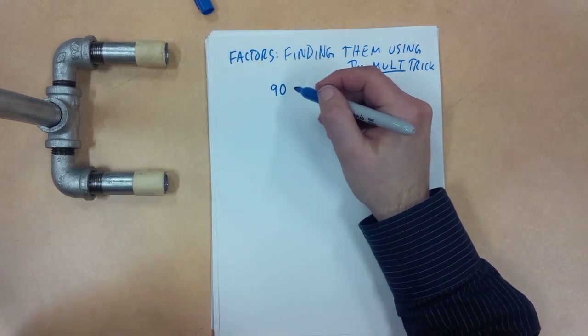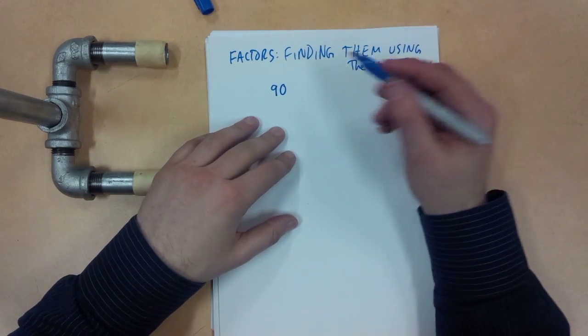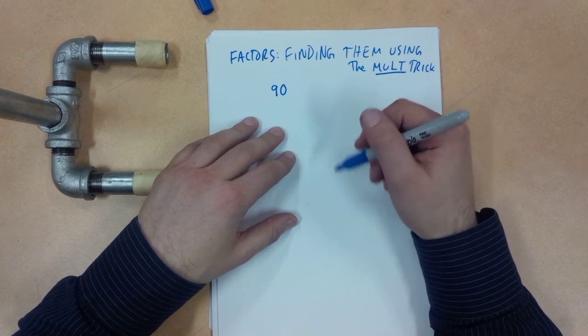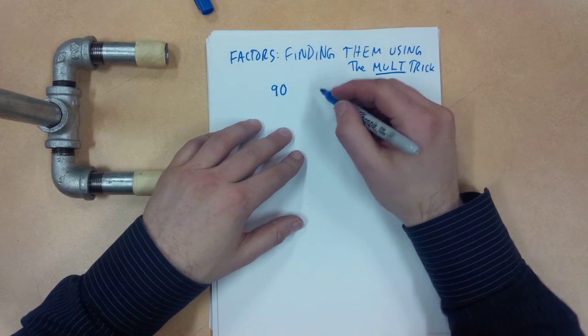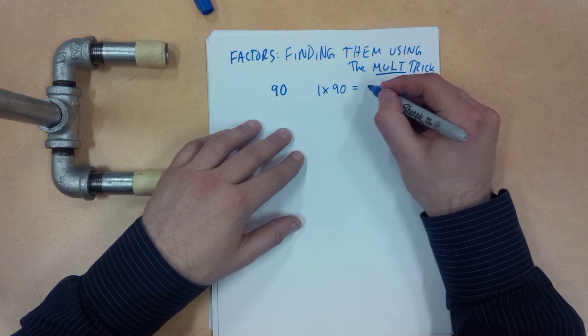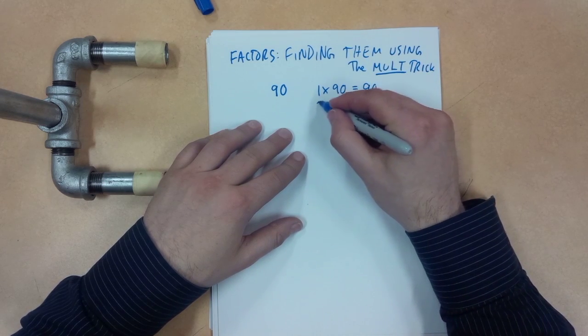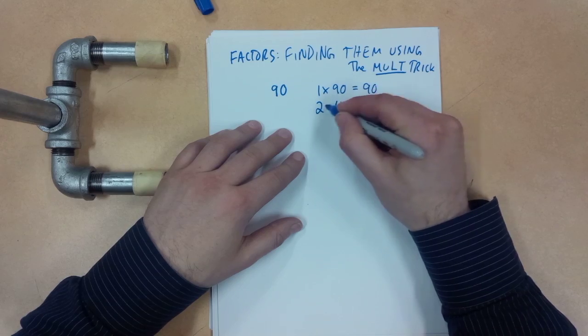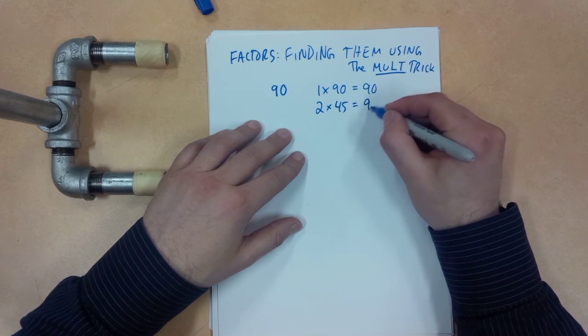If I had to find the factors for the number 90 here, I could go 1, 2, 3, 4 and just manually do it, or I could use a trick. Check it out. 1 times 90 is 90. If I double this number and cut this number in half, I'm going to get the same number. Now that's true.